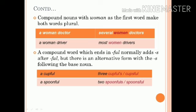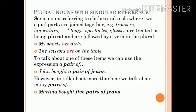Similarly, both 'two spoonfuls' and 'two spoons full' are correct. Now we will see plural nouns with singular reference. Some nouns referring to clothes and tools where two equal parts are joined together — for example: trousers, binoculars, tongs, spectacles, glasses — are treated as plural and are followed by a verb in the plural. For example: 'My shorts are dirty.'